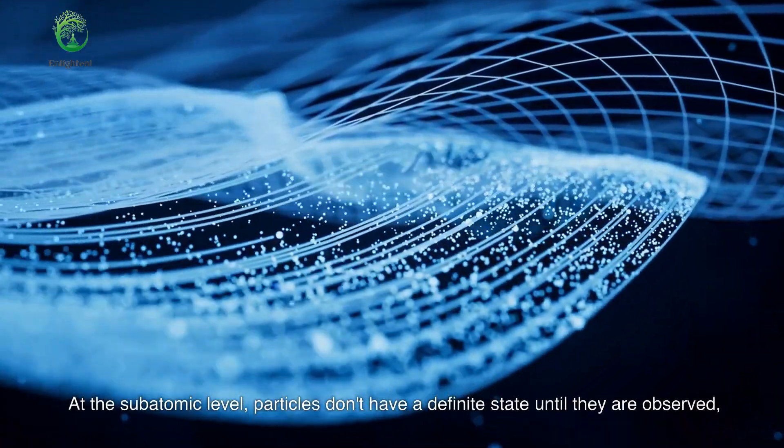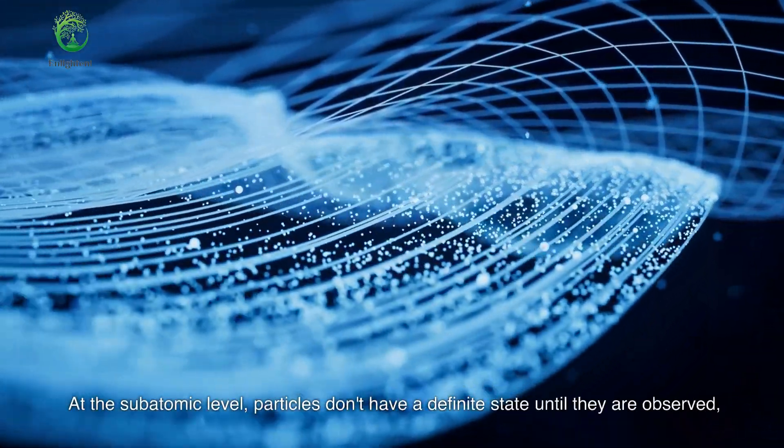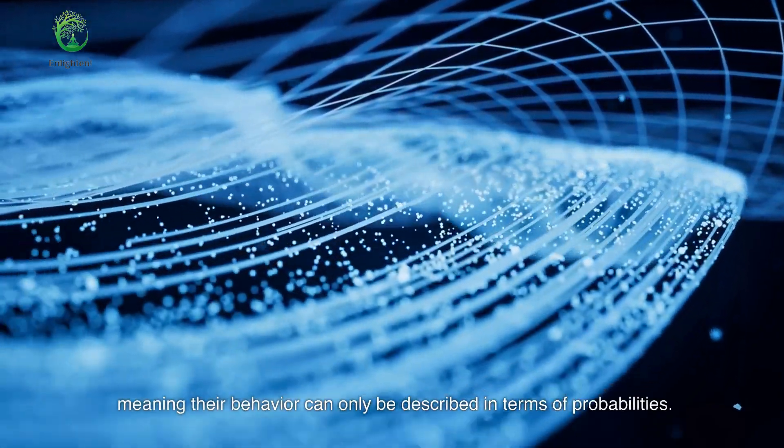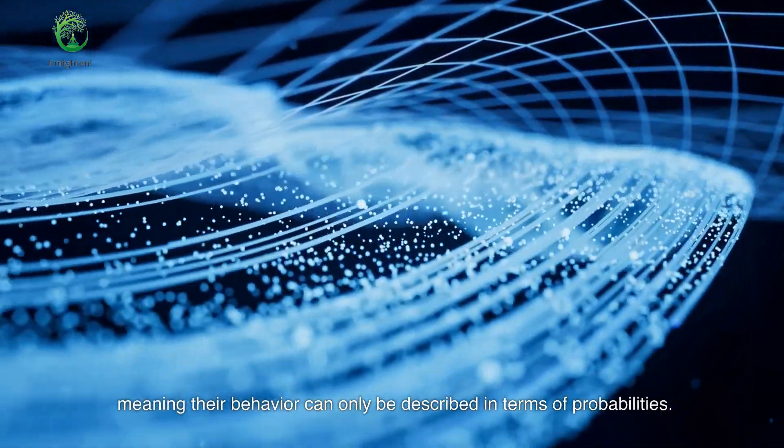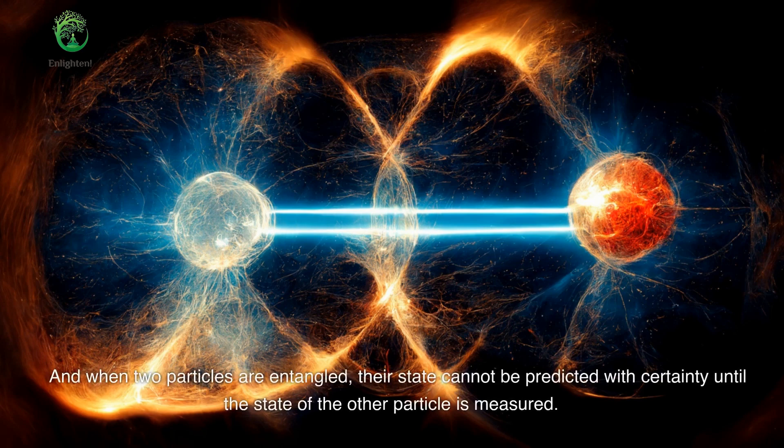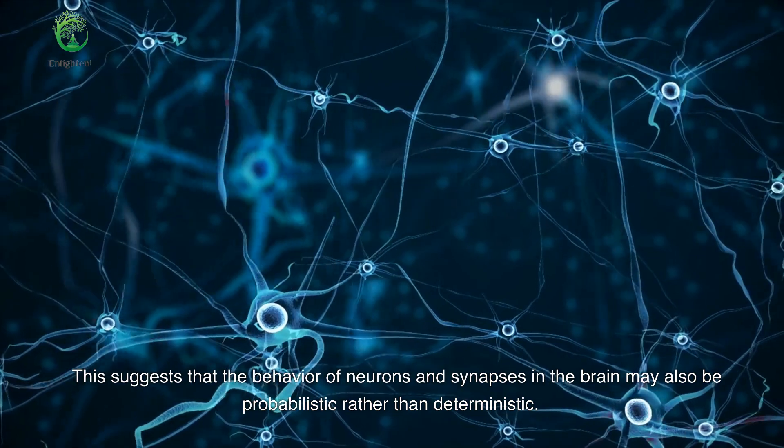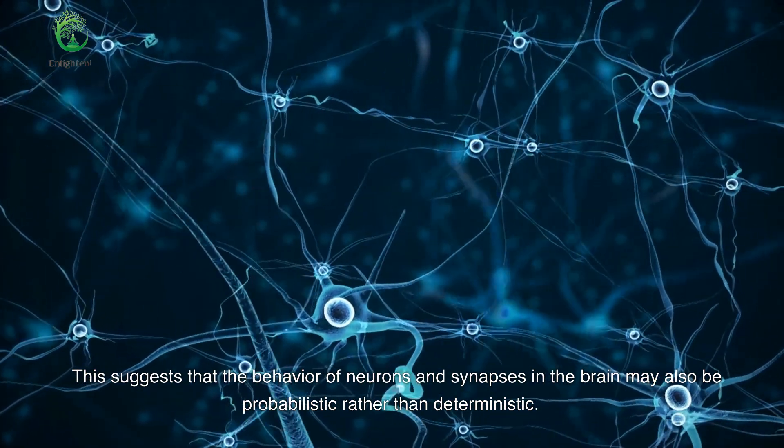At the subatomic level, particles don't have a definite state until they are observed, meaning their behavior can only be described in terms of probabilities. And when two particles are entangled, their state cannot be predicted with certainty until the state of the other particle is measured. This suggests that the behavior of neurons and synapses in the brain may also be probabilistic rather than deterministic.